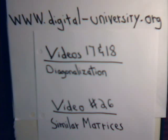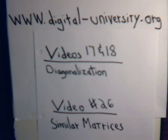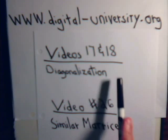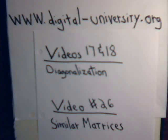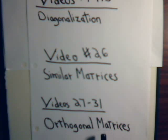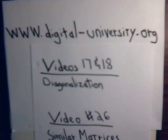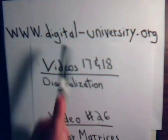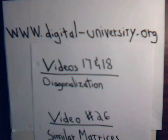In this video we're going to introduce the concept of the principal axis of transformation, drawing upon a knowledge base established in the previous videos — video 17 and 18 where we learned how to diagonalize matrices, video 26 on similar matrices, and videos 27 to 31 on orthogonal matrices. The playlist for all the videos is at digital-university.org.